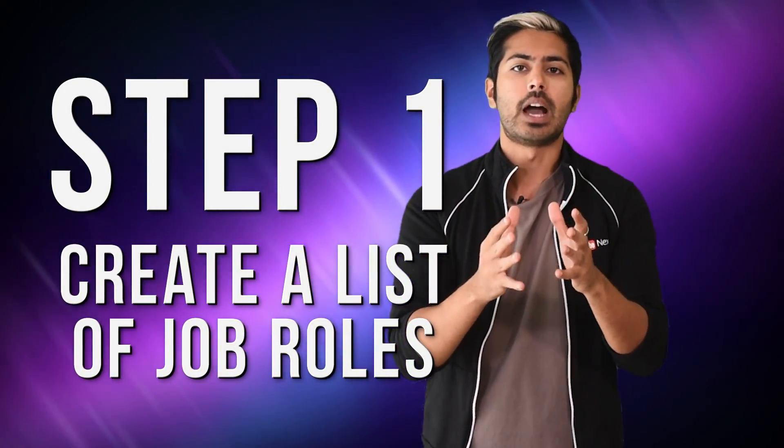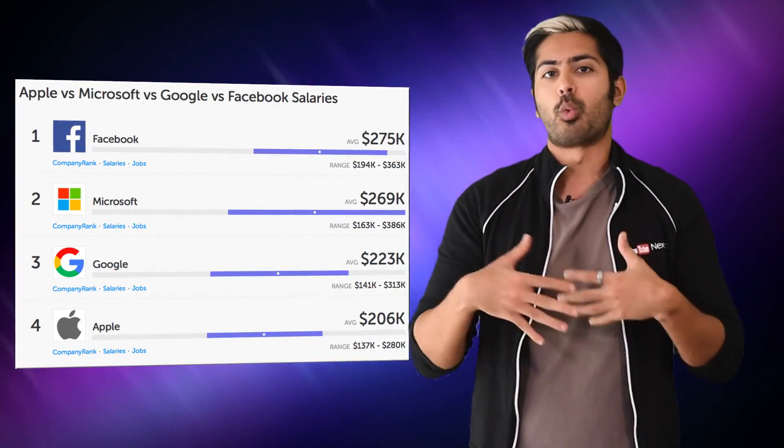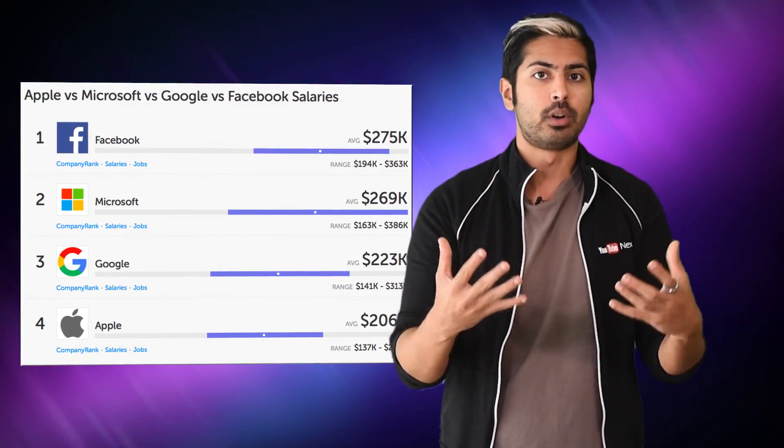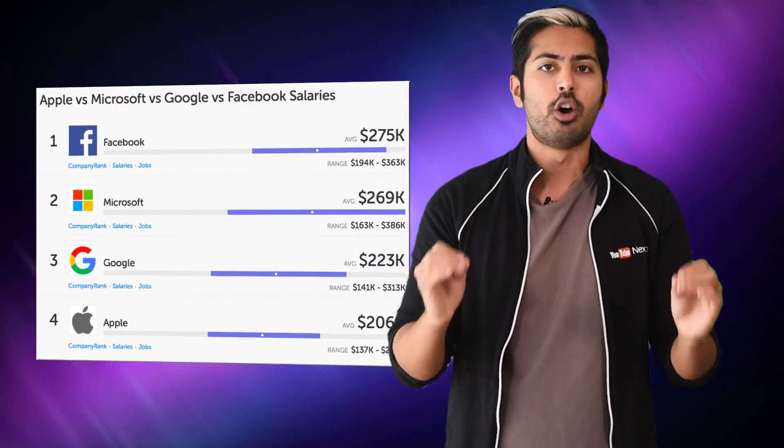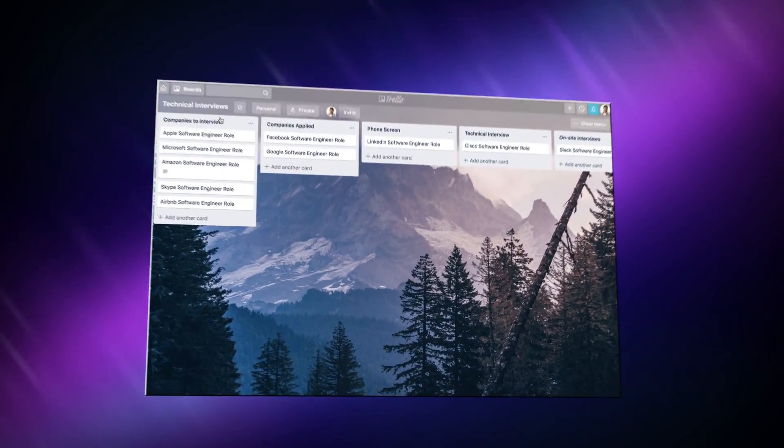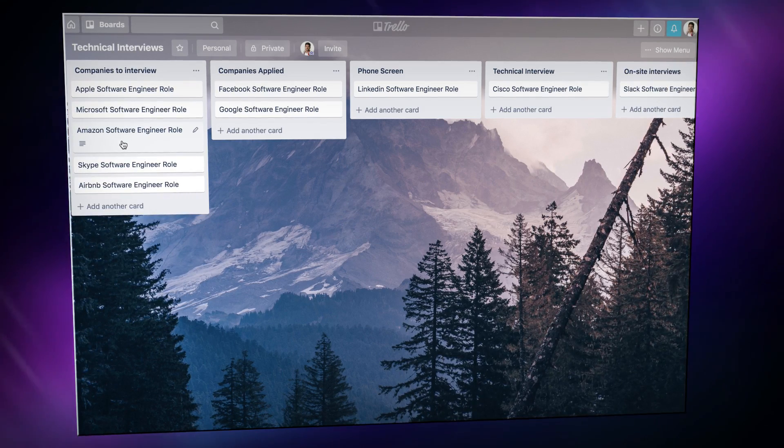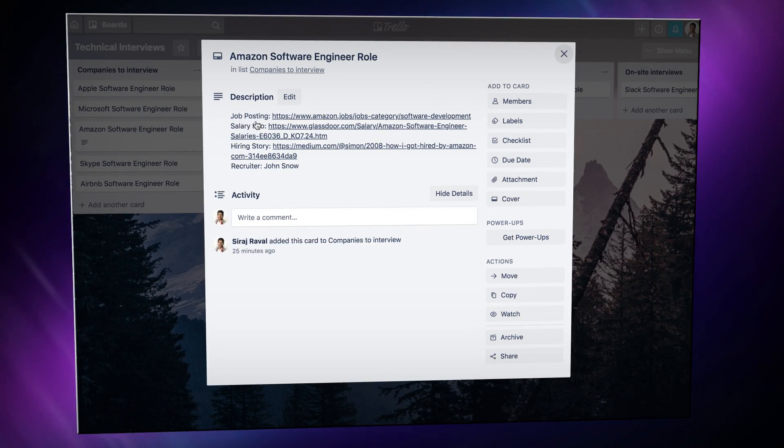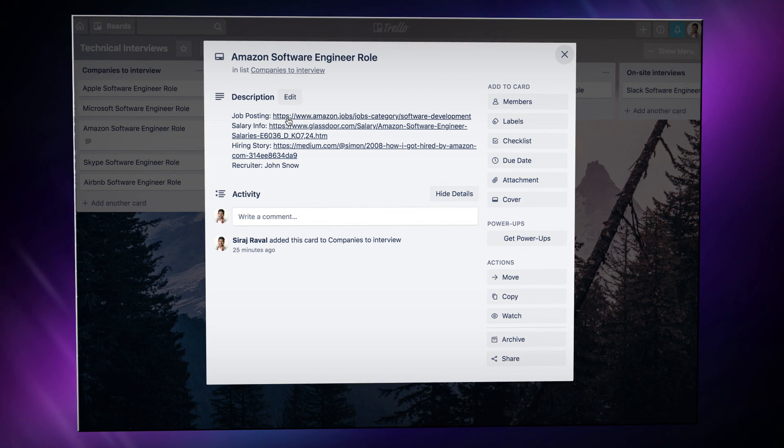So let's start with step one, create a list of companies and roles that interest you. If you're interviewing with multiple companies at the same time while still in school or working a day job, the amount of things you'll have to remember like names, company information, and role descriptions will absolutely be overwhelming. That's why it's important to use a tool to keep track of where you are in the interview pipeline chronologically. I really like Trello. It's a free tool where tasks are represented by cards and each step of the process is represented by a column.